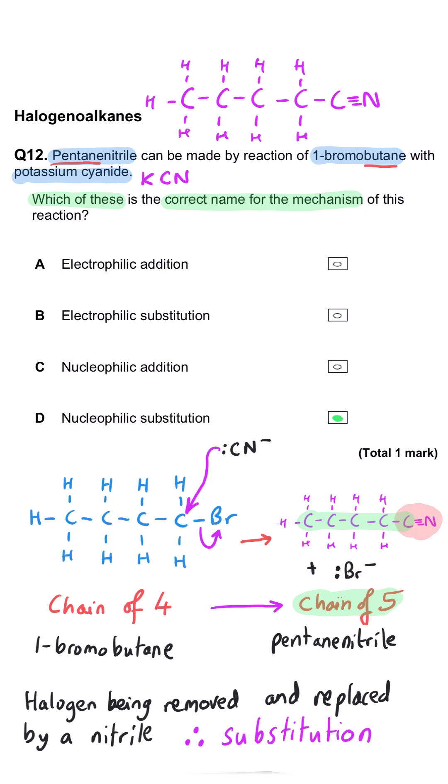Electrophilic addition is therefore wrong—that's what alkenes readily undergo. Electrophilic substitution is benzene and aromatic compounds, and nucleophilic addition is the carbonyl compound reaction. So we're left with D as the correct answer.